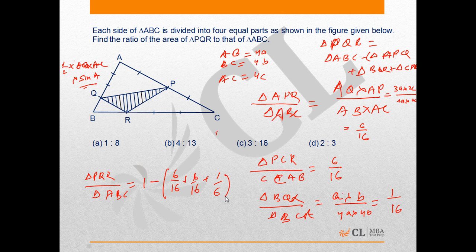If we have any confusion about why we are subtracting, we can go in that fashion as well. If the area of triangle ABC is 16, then area of triangle AQP will be 6.